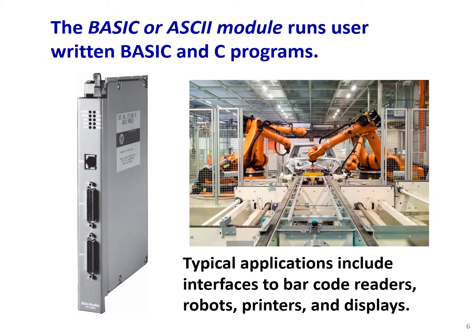The BASIC or ASCII modules run user-written BASIC and C programs. Typical applications include interfaces to barcode readers, robot printers, and displays. Here we have another special module that reads BASIC or ASCII information, written in BASIC or C programs. For example, we have an industrial robot, and we want to interface that robot with our PLC. The robot has its own program, and that program communicates with the PLC through these specific modules.